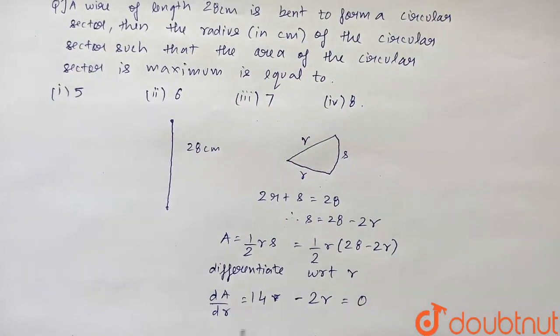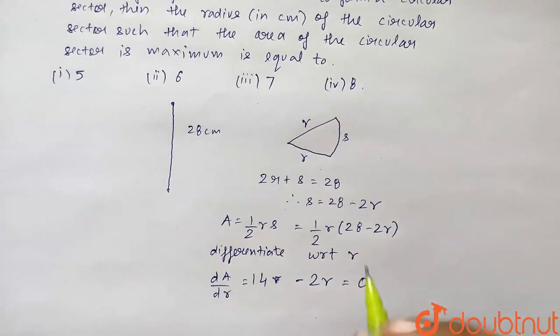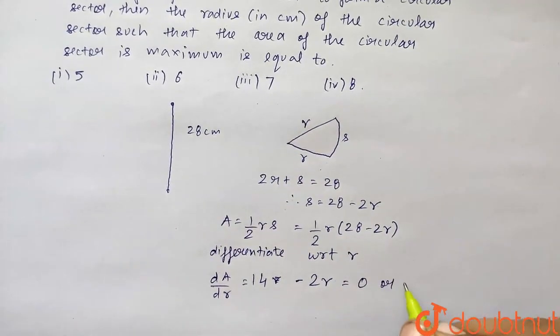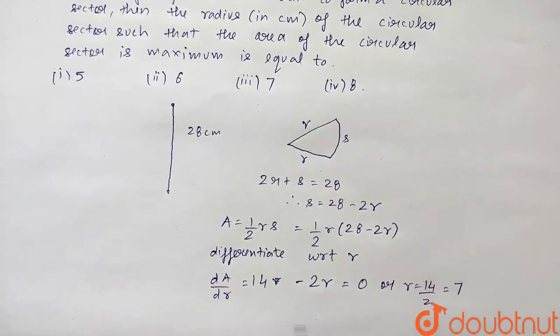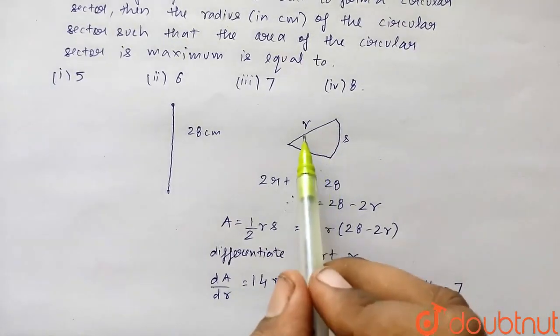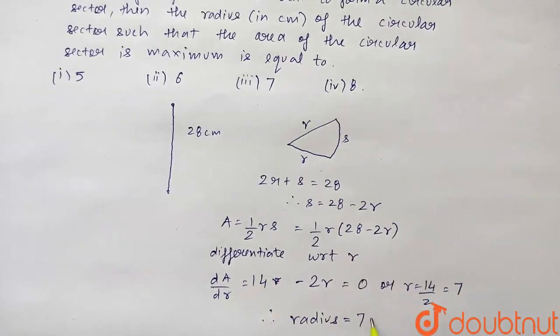So now if it is 0, we will get 14 minus 2R equals to 0 or we get the value of R equals to 14 by 2 which equals to 7. So therefore radius that we assumed in this sector, R equals to 7 units.